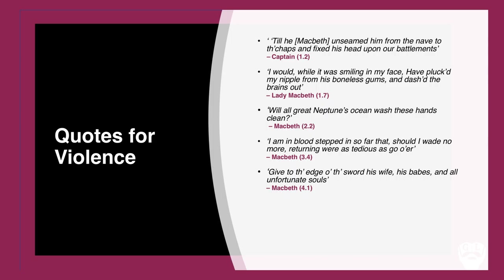In Act 4 Scene 1, Macbeth commands soldiers to give 'to the edge of the sword his wife, his babes, and all unfortunate souls' of the Macduff family — murdering innocent women and children, deeply frowned upon then as now. When surrounded near defeat, Macbeth shows a doomed nobility: 'Blow wind, come wrack; at least we'll die with harness on our back' — he wants a warrior's end, and he most certainly gets one.